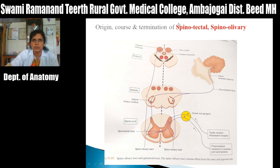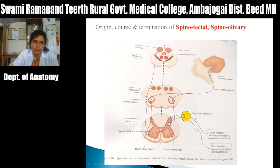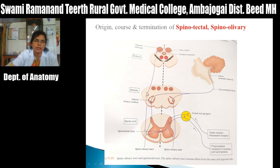For the spinotectal tract, fibers from nociceptive peripheral receptors are carried by peripheral processes of dorsal root ganglia. Central processes carry them to the dorsal horn, where they relay. Fibers cross to the opposite side and go to the contralateral lateral funiculus, continuing as the spinotectal tract. This tract ascends through the medulla and pons and terminates in the superior colliculus.